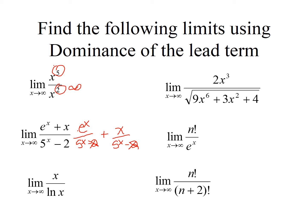So I can look at this as e to the x over 5 to the x. Since e is about 2.718 and 5 is greater than that, the bottom grows faster, so this goes towards 0. And of course, this exponential is going to grow faster than that linear, so this would be 0.